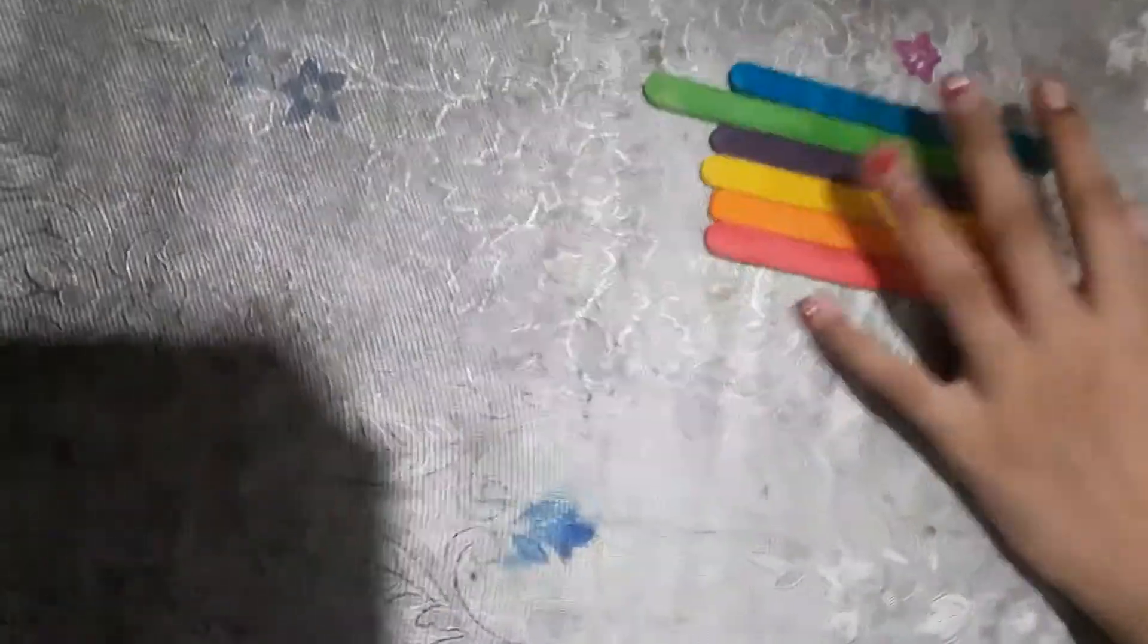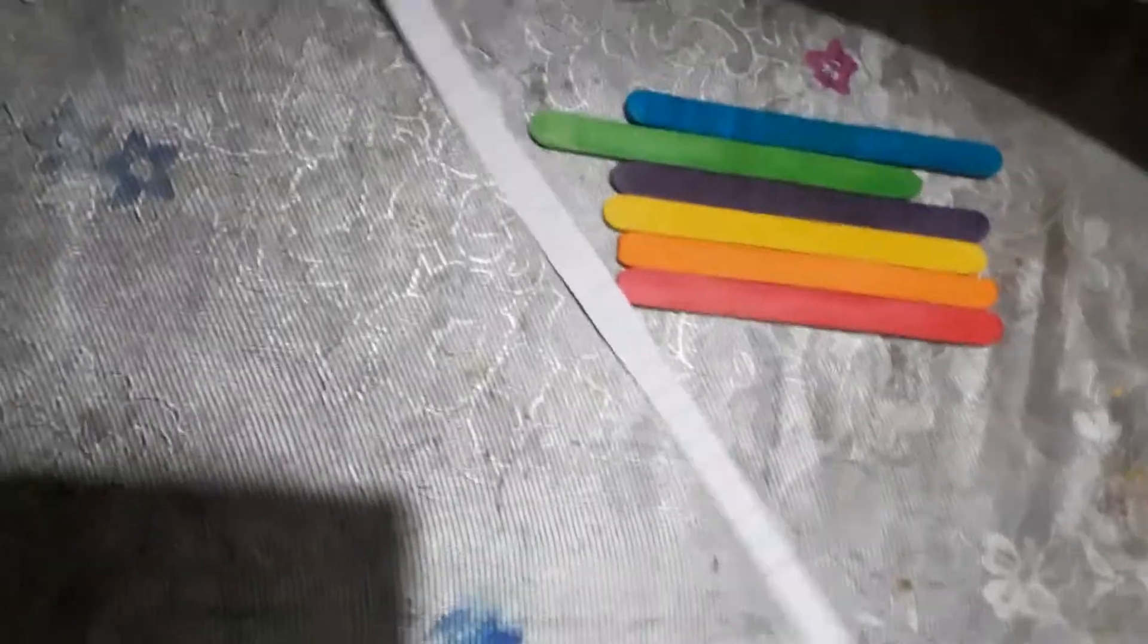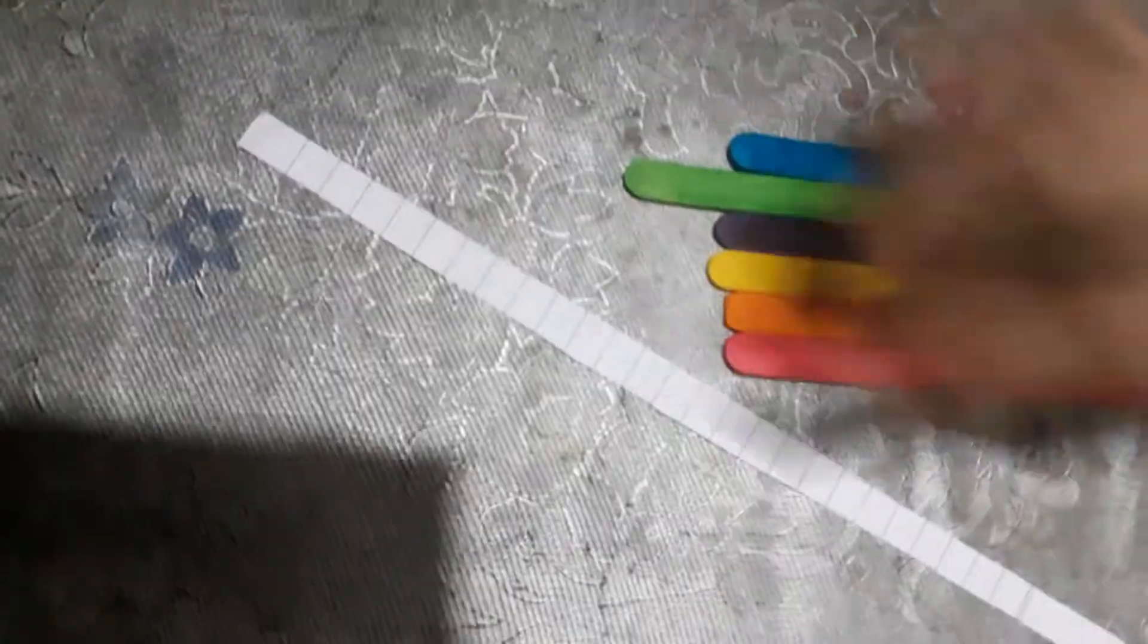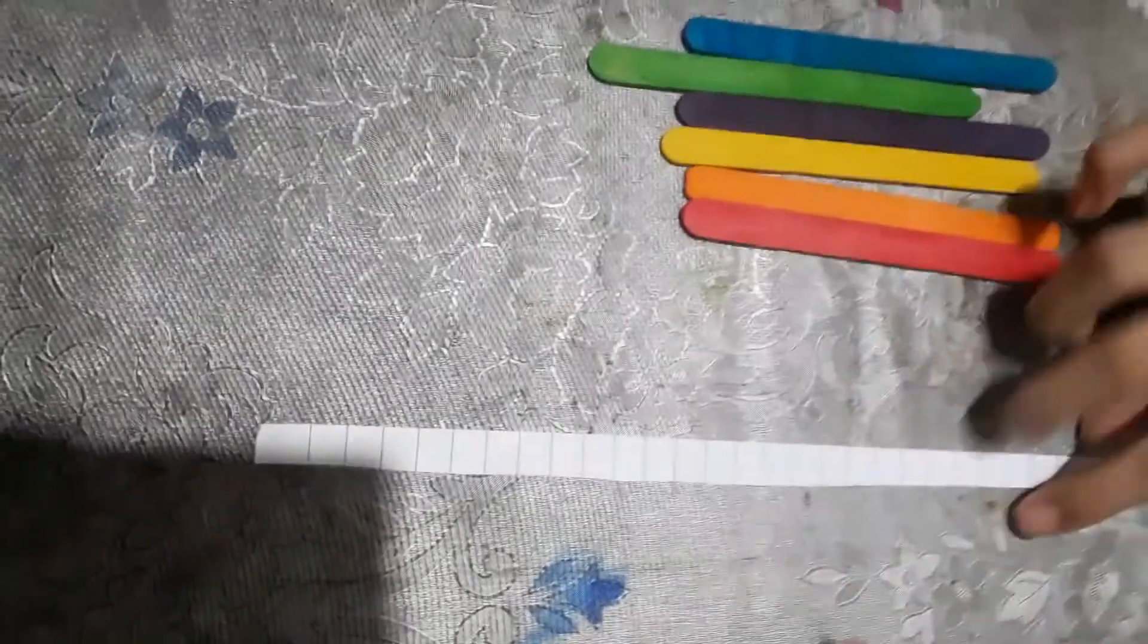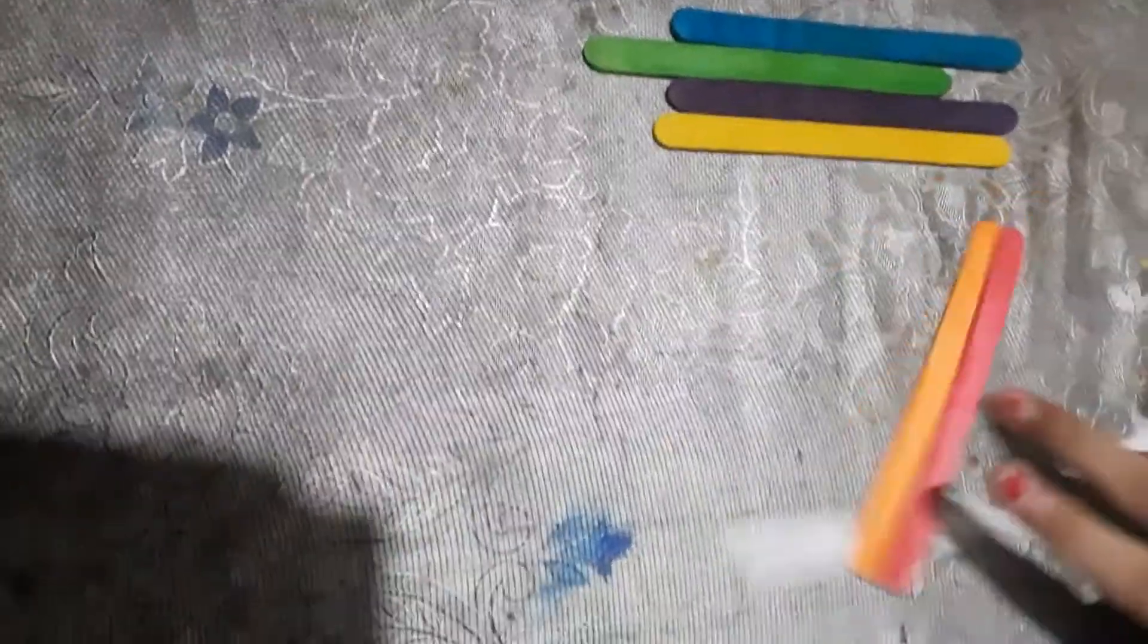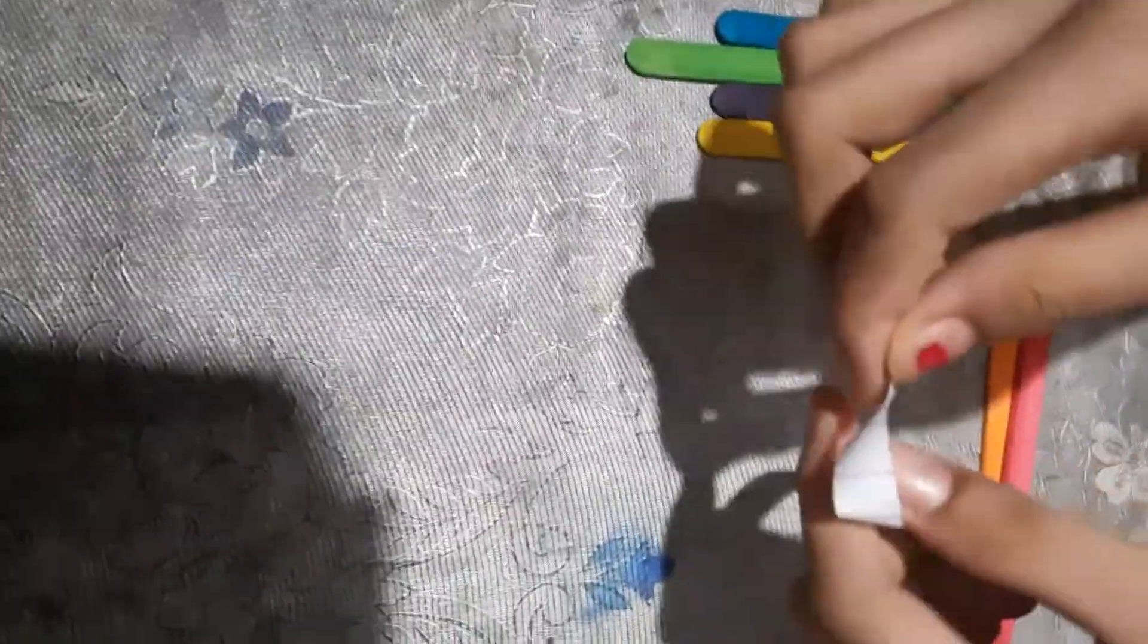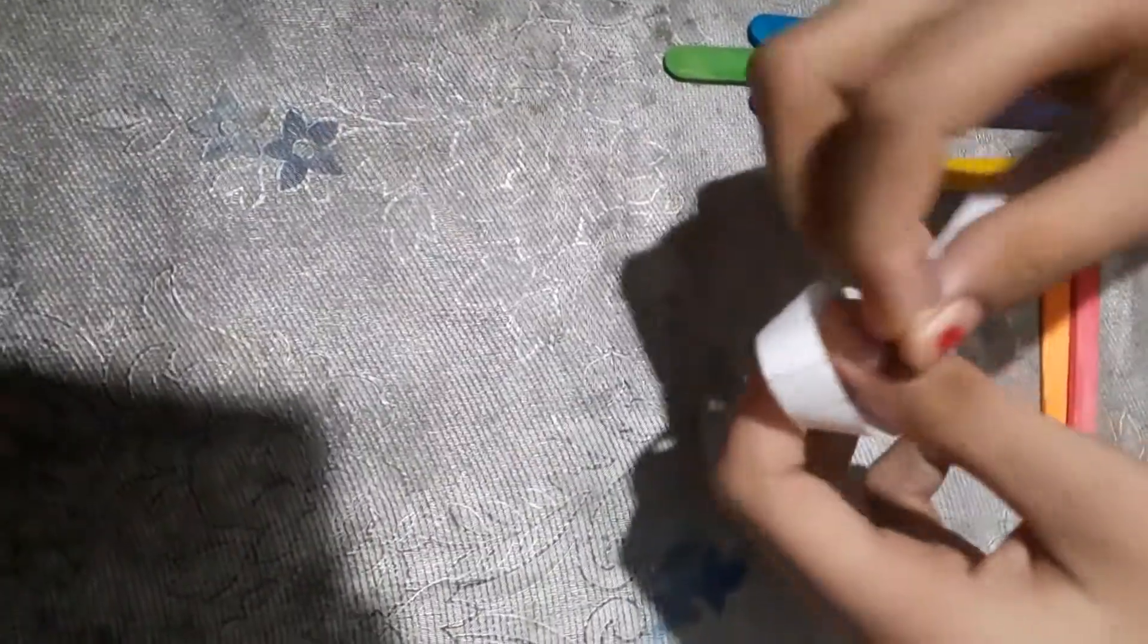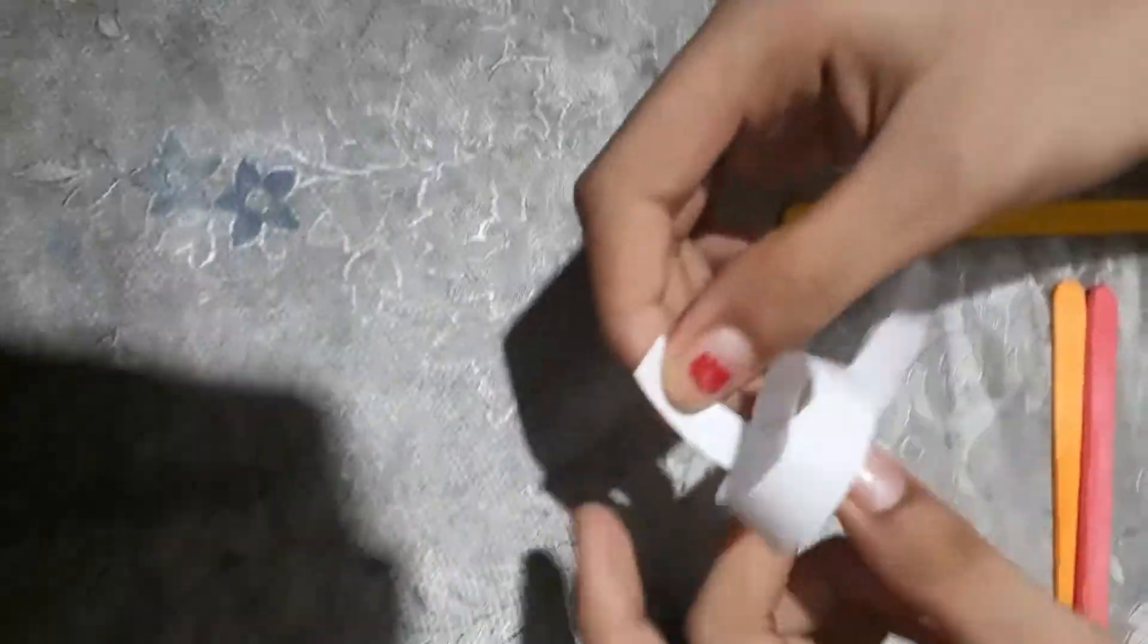So I'm going to show you how to make a star. You need a 21 centimeters long paper, and then you need to make it like a tie like this. And then from here you need to tie it.